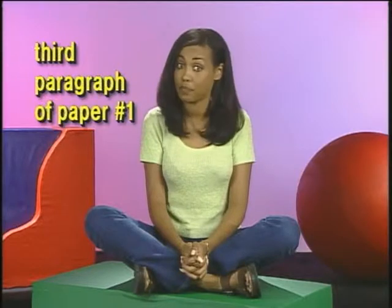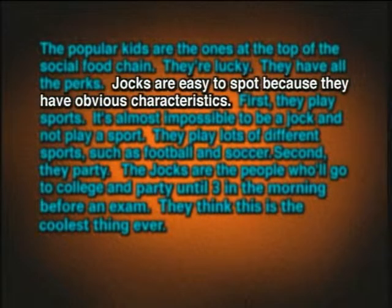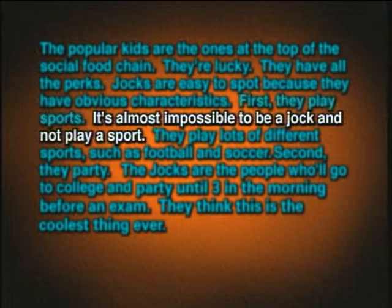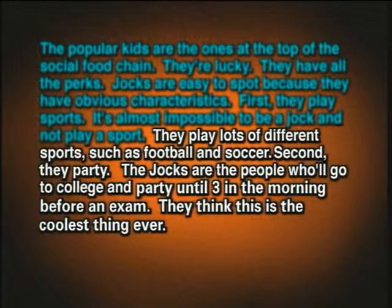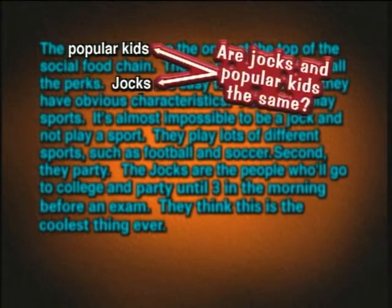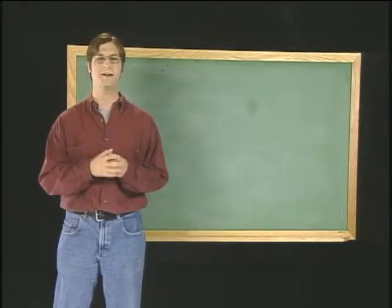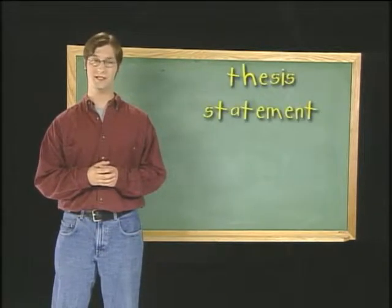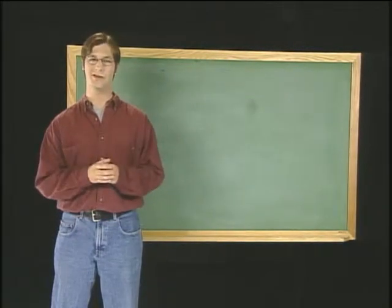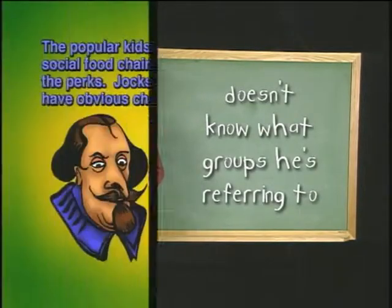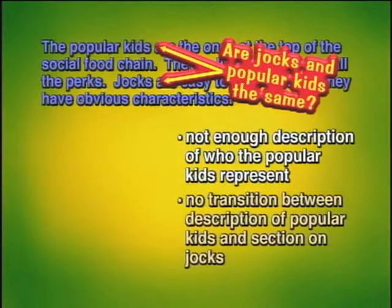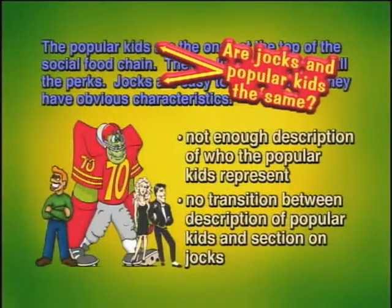Let's go back to the third paragraph of paper number one, where Nathan describes jocks. Nathan wrote: 'Jocks are easy to spot because they have obvious characteristics. First, they play sports. It's almost impossible to be a jock and not play a sport.' Sam's confused because she's not sure if jocks and popular kids are the same thing. She's confused because Nathan's original thesis statement is so vague — it didn't state the different groups, so his reader is having problems following his train of thought. It's also confusing because there's not enough description of who the popular kids represent, and there's no transition between the description of popular kids and the section on jocks.